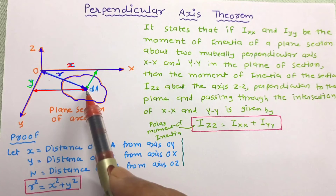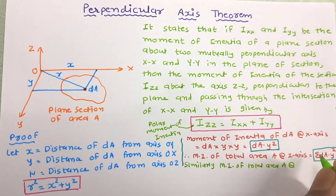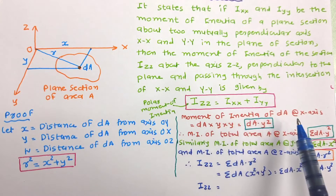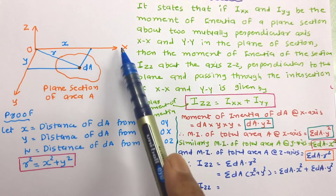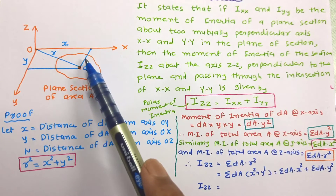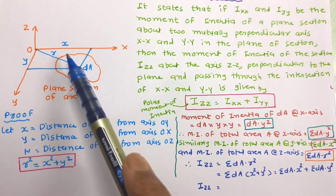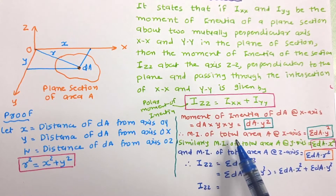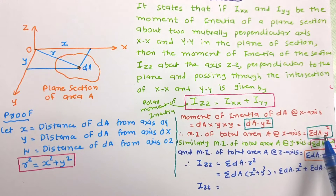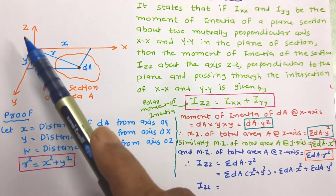Let us determine the moment of inertia of DA about the X axis. The moment of inertia of this small area about the OX axis equals area times distance squared, so it is DA × Y². The moment of inertia of the total area about the X axis is equal to the summation of all such terms: IXX = Σ(DA × Y²).